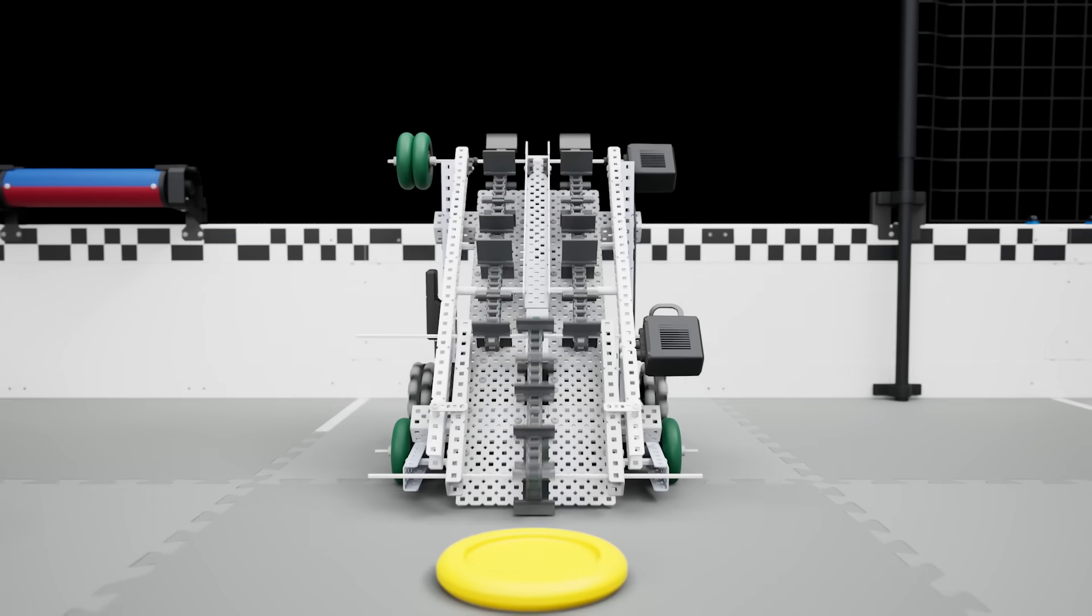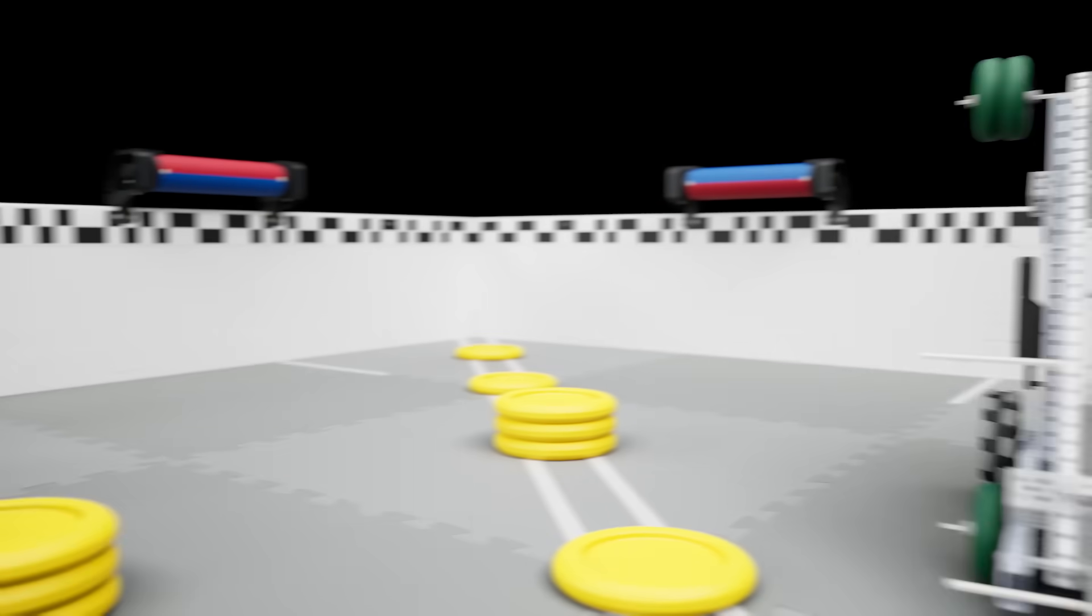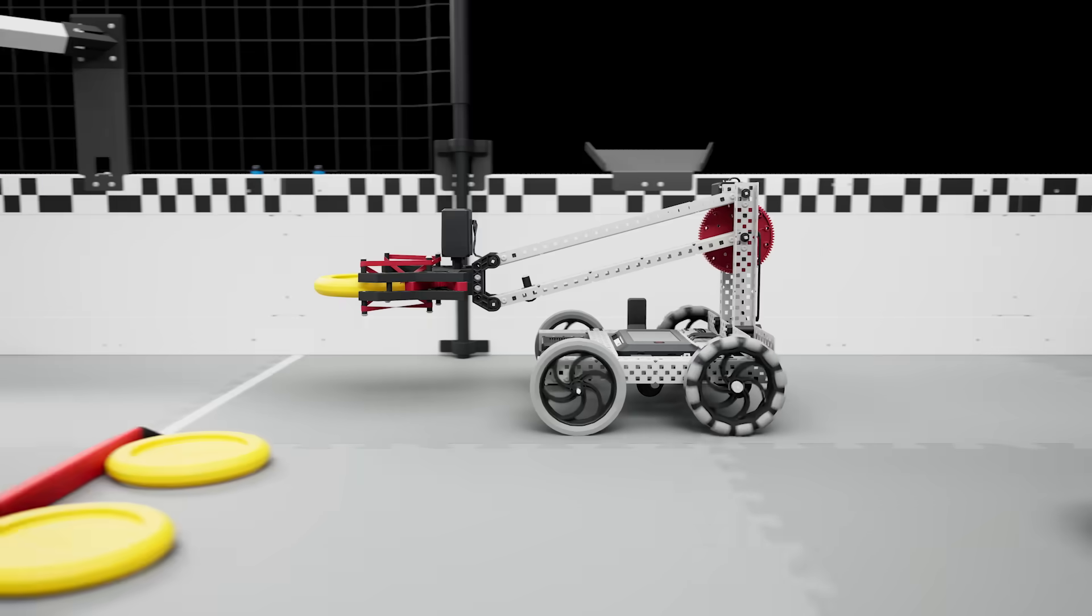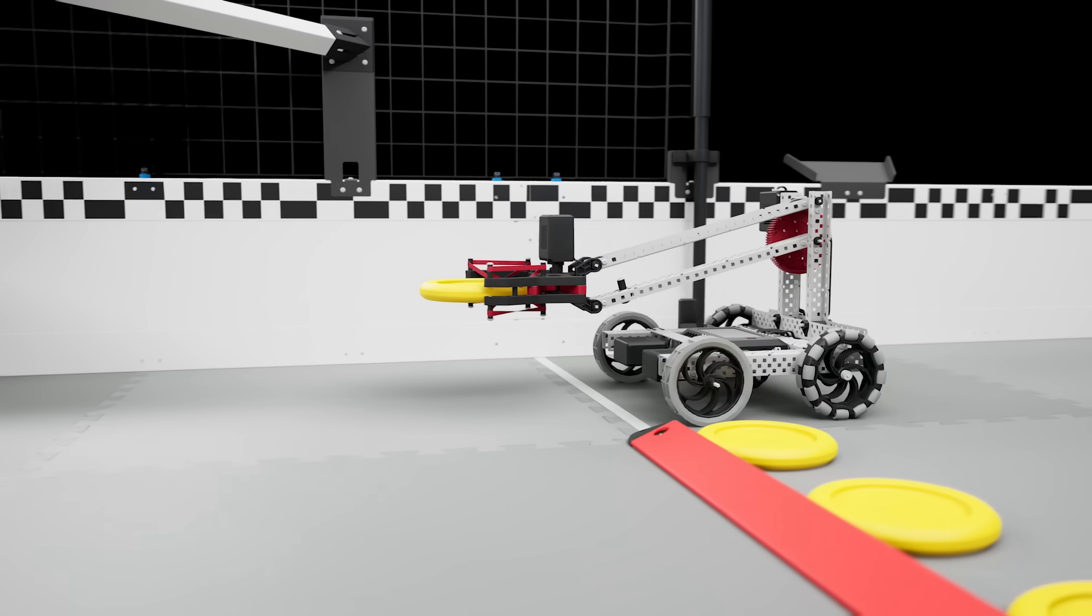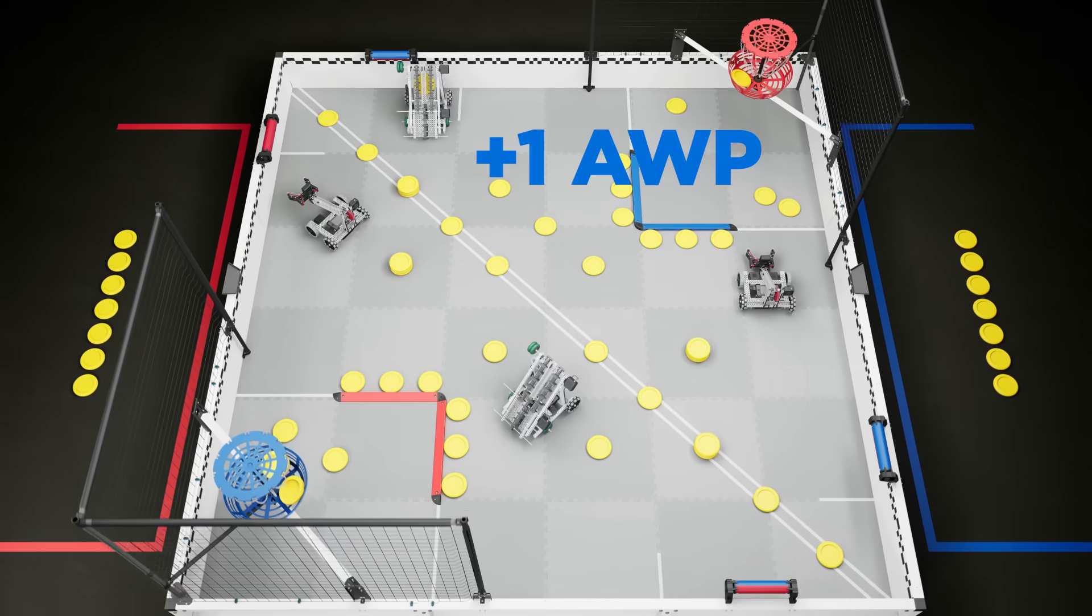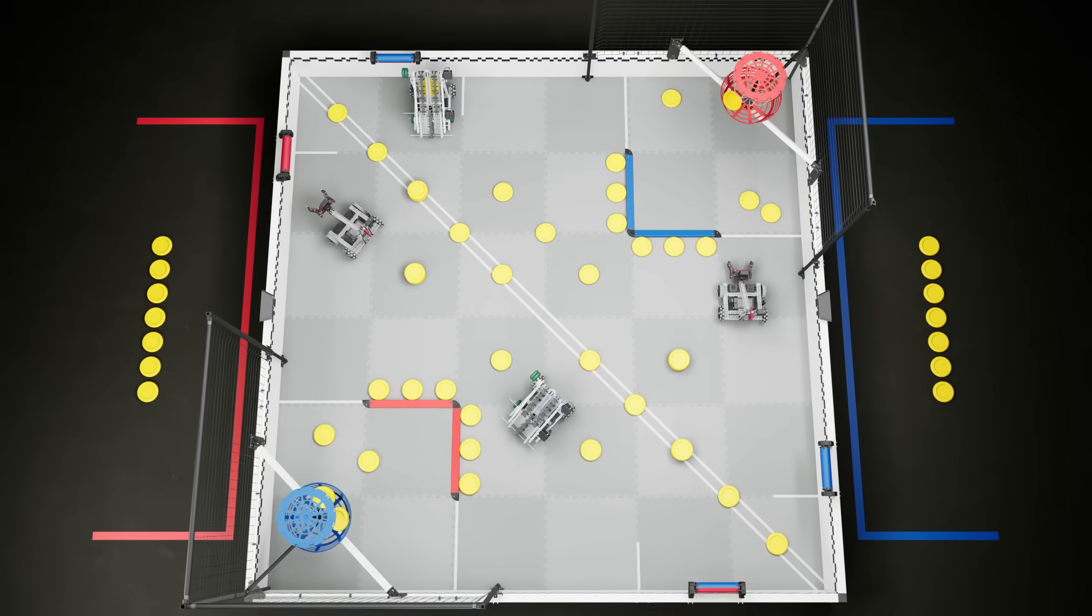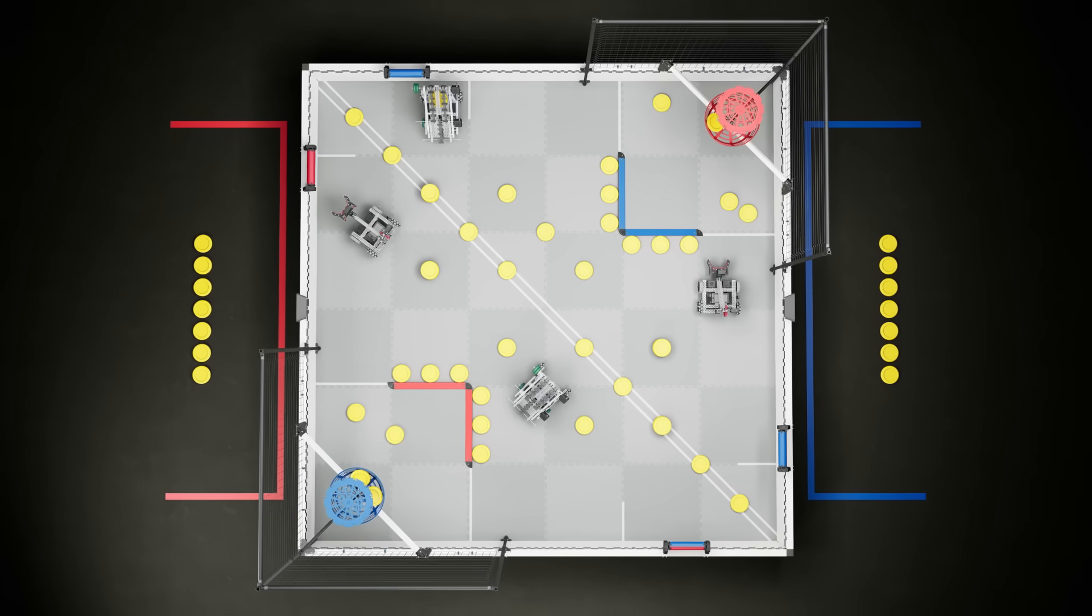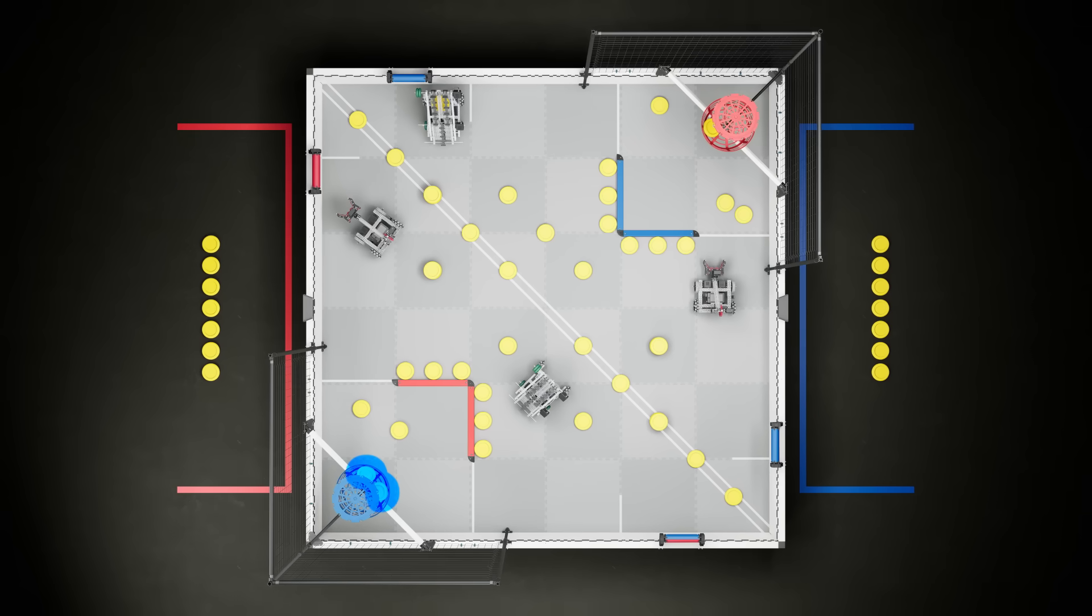Each match begins with a 15-second autonomous period, where robots operate without input from their drivers. In addition to competing for the autonomous bonus, each alliance also has the opportunity to earn an additional autonomous win point by owning both rollers on their side of the field and scoring at least two discs in their high goal.